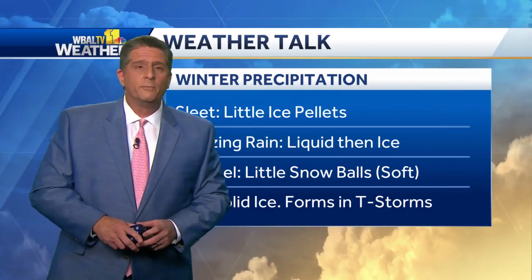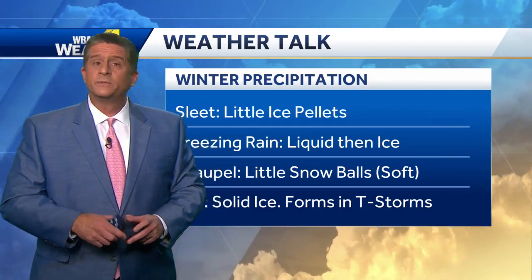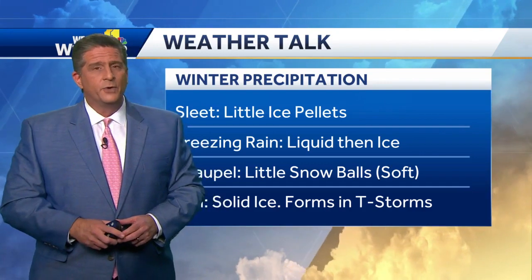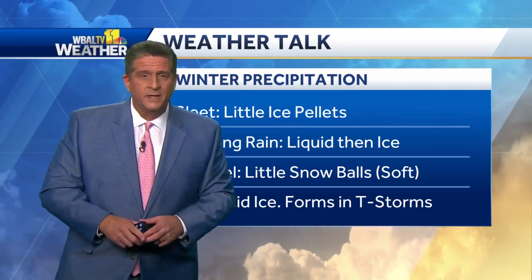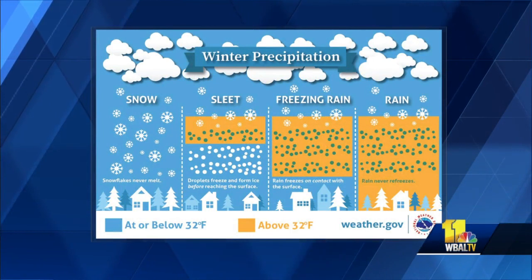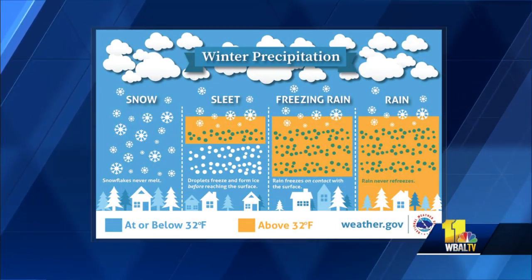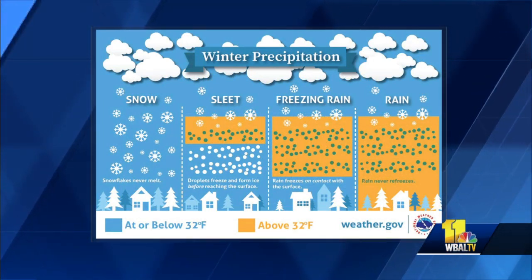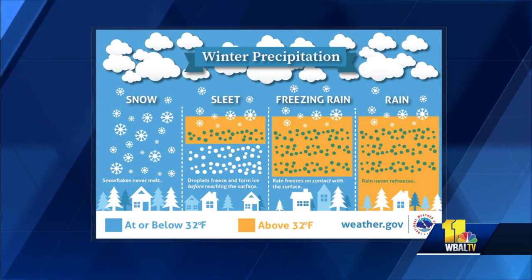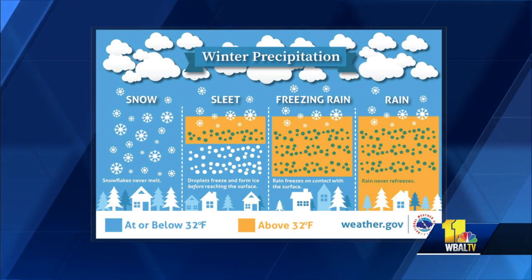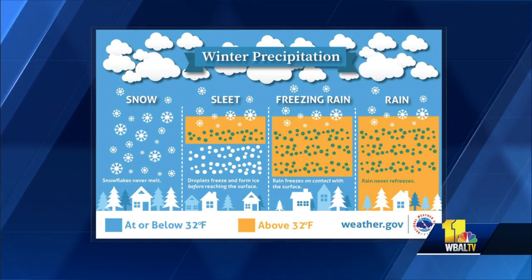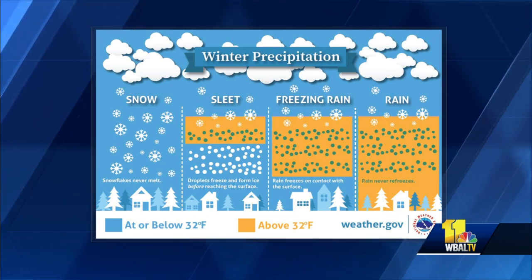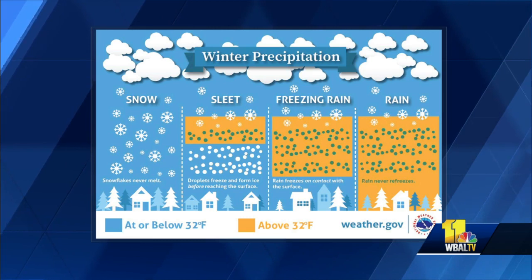If you want more information on these types of topics, we have a great resource for you. Go to weather.gov — go to the education tab, and you can see wonderful graphics like this. If you're a teacher, I would highly recommend that you go to this product on the National Weather Service website, weather.gov. Go to the education tab and you'll see great graphics that explain how these types of precipitation form and what they are.